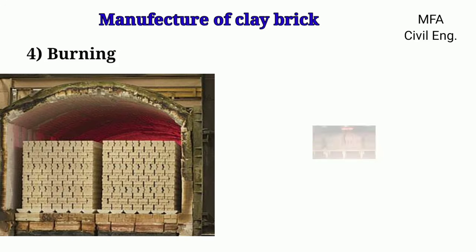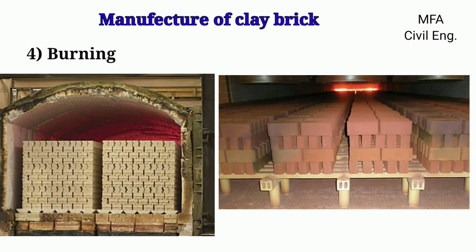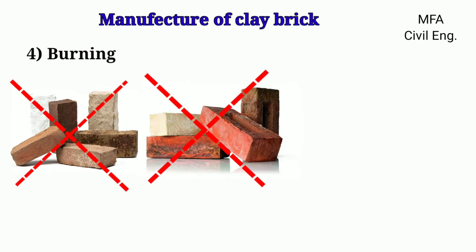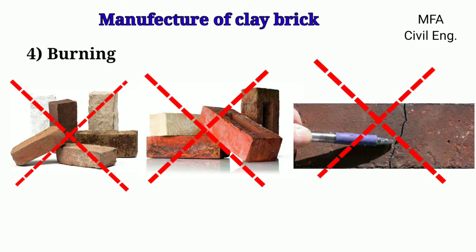In kiln burning, bricks are stacked without any fuel and fireplace are arranged below the stack. Fire is lit below the stack and kept continuous until the bricks are burned. The kiln has a permanent enclosure wall inside which bricks are placed over the fire. Bricks are burned uniformly throughout the stack — no bricks are under-burned, over-burned, cracked, or warped in a kiln. However, it is not as economical as clamp burning.